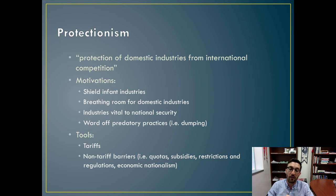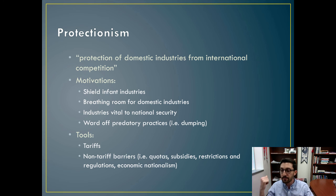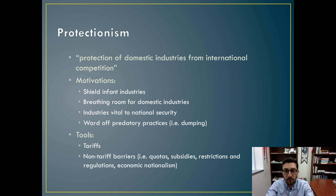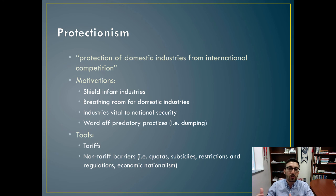Subsidies are another kind of non-tariff barrier. This is where you provide, say, farmers additional money to grow crops they're used to growing, because they would otherwise be economically uncompetitive compared to what could be produced in developing countries due to labor costs and technology. The federal government subsidizes farmers by providing them with a chunk of money so they can artificially lower the price of their goods and remain economically competitive. Even though subsidies support certain interest groups like farmers, they introduce a market imperfection that doesn't reflect the true price of an actual good.